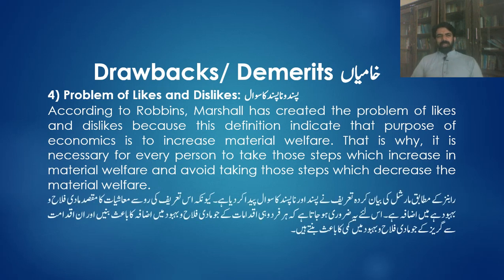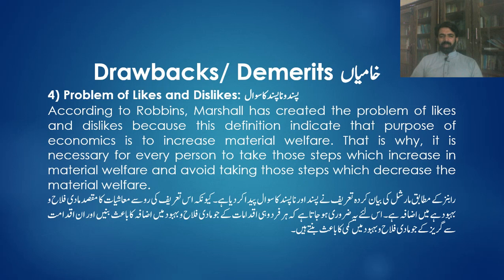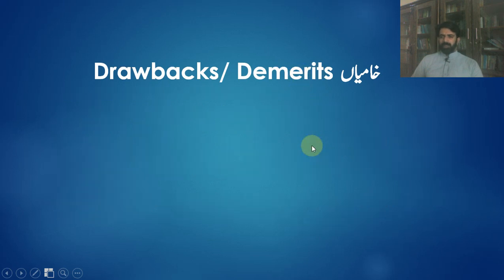چوتھی خامی: problem of likes and dislikes — Marshall کہتا ہے کہ انسان صرف ایسی economic activities کرے جو اس کی فلاح و بہبود میں اضافہ کریں اور ہر ایسی effort سے بچے جو فلاح و بہبود میں کمی کرتی ہو۔ اس طرح Alfred Marshall نے likes اور dislikes کا concept پیش کر دیا، جبکہ economics اس سے بالاتر ہے۔ اس نے کہا کہ ایسی چیزوں کو like کریں جو welfare میں اضافہ کریں اور ایسی چیزوں کو dislike کریں جن سے فلاح و بہبود میں اضافہ نہ ہو۔